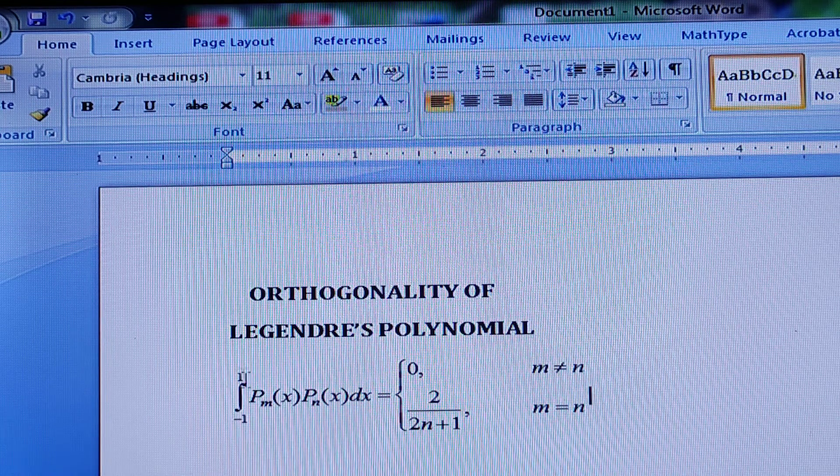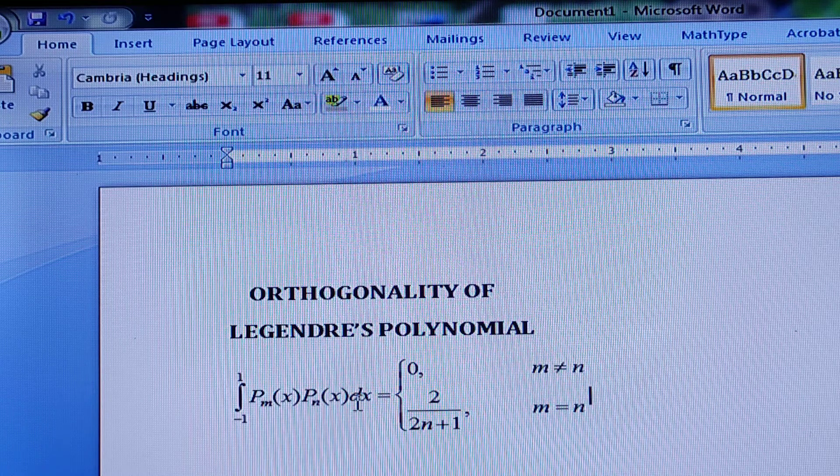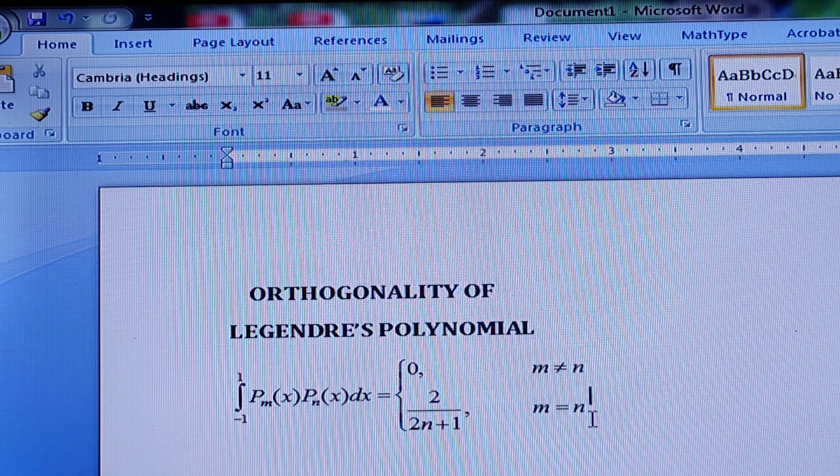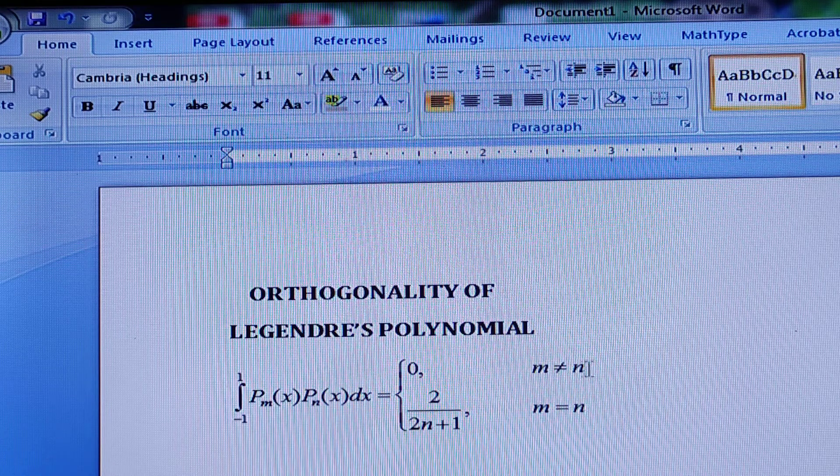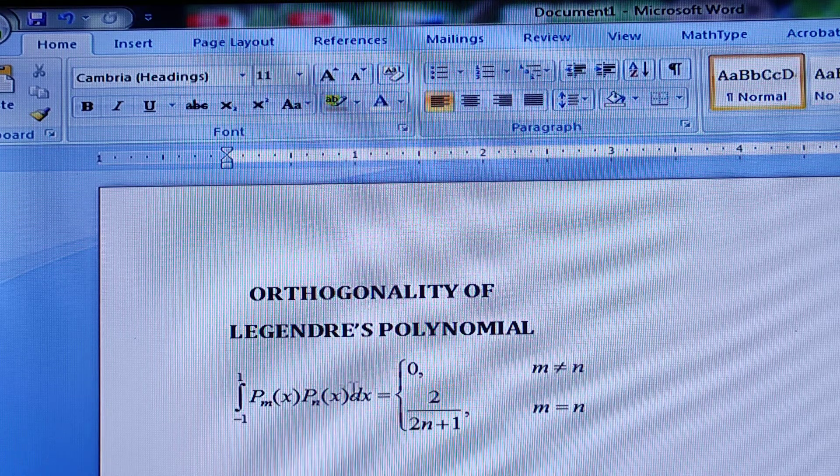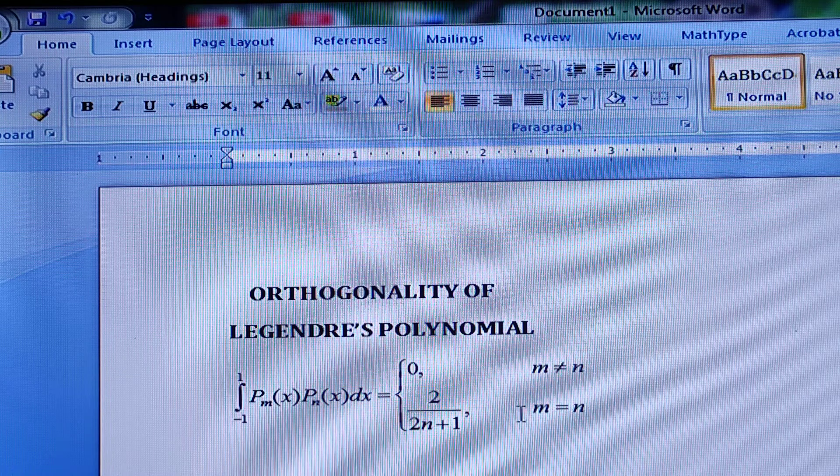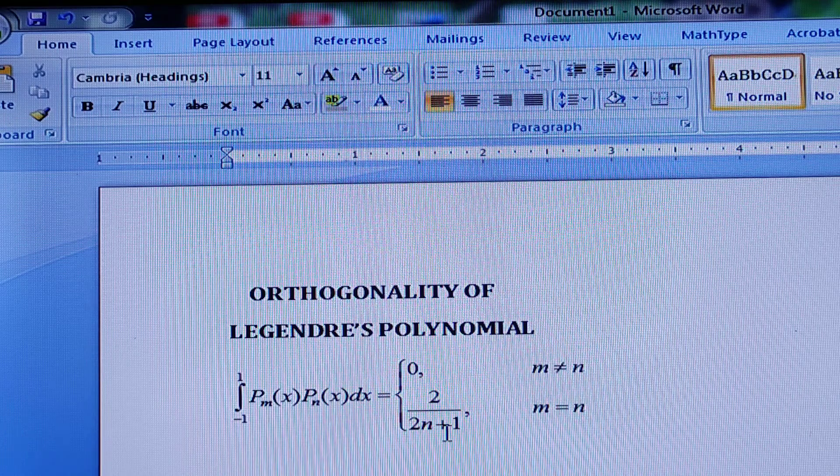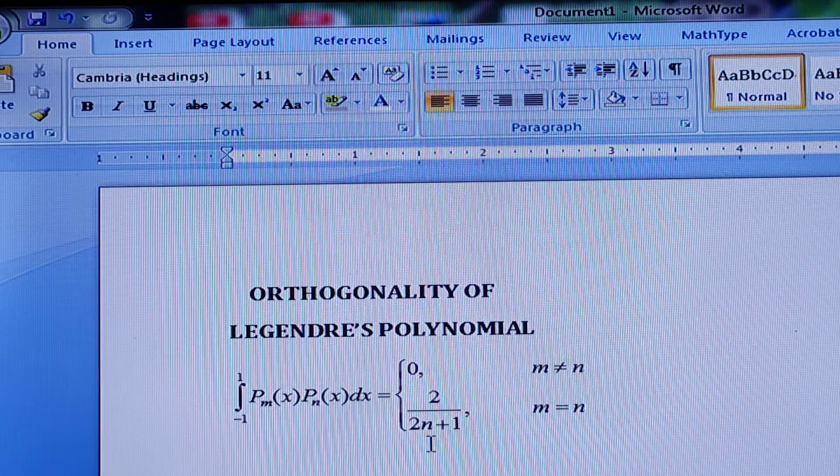The integral from minus 1 to plus 1 of P_M(X) times P_N(X) dX is equal to 0 when M is unequal to N, and it will be 2/(2N+1) when M is equal to N. If M and N are unequal, then this value will be equal to 0, and if M is equal to N, then the value will be 2/(2N+1). So this we will do by the help of Scilab.